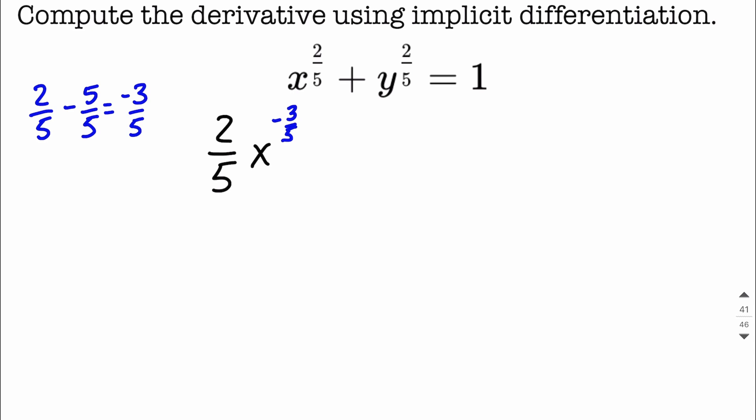We have our y to the 2 fifths. Very similar. We're going to bring the 2 fifths down. We're going to reduce the exponent by 1, so that exact same thought process, 2 fifths minus 5 fifths makes negative 3 fifths. This time we will go ahead and include a dy dx with this problem, right? Because our variable is y, we're differentiating with respect to x. On the right-hand side, the derivative of a constant is going to be 0.